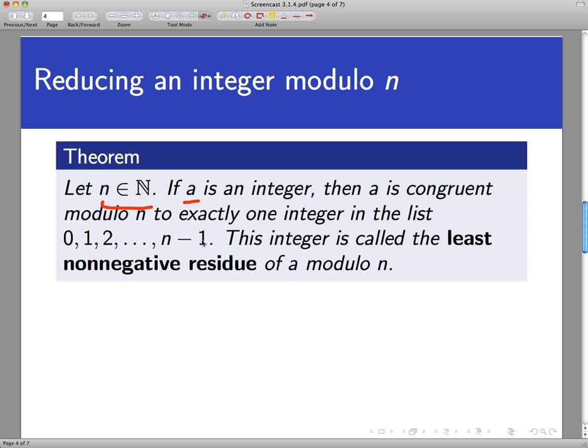So there is a least non-negative number to which a is congruent modulo n. And we're going to call the fancy name for that integer is the least non-negative residue of a modulo n.